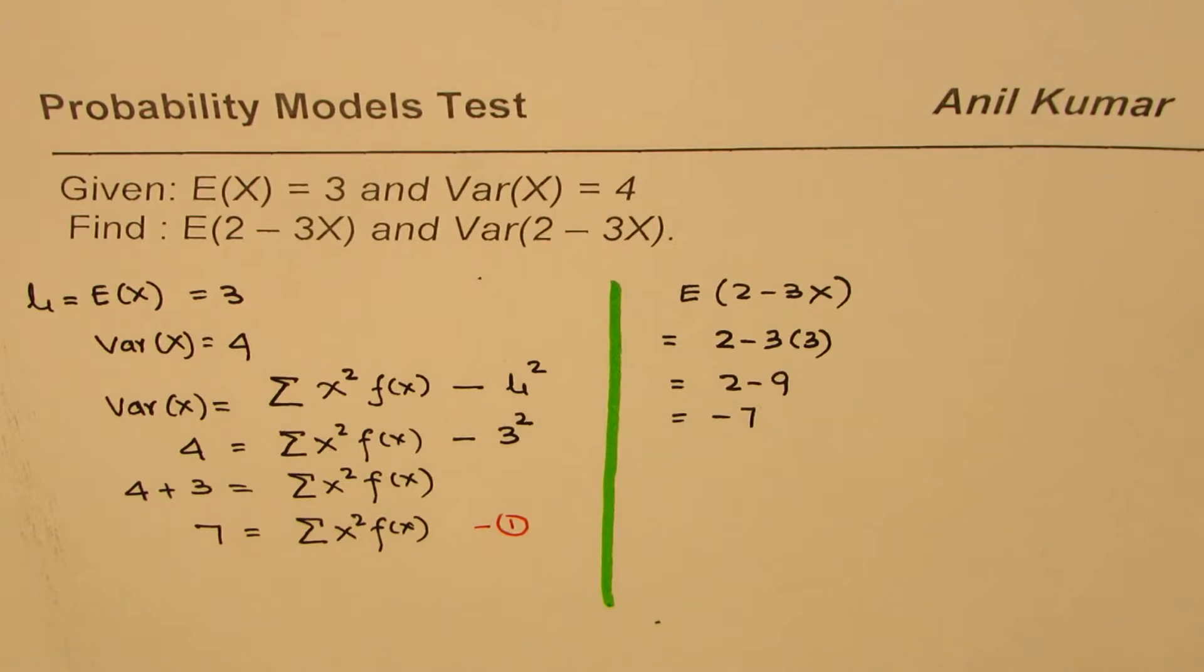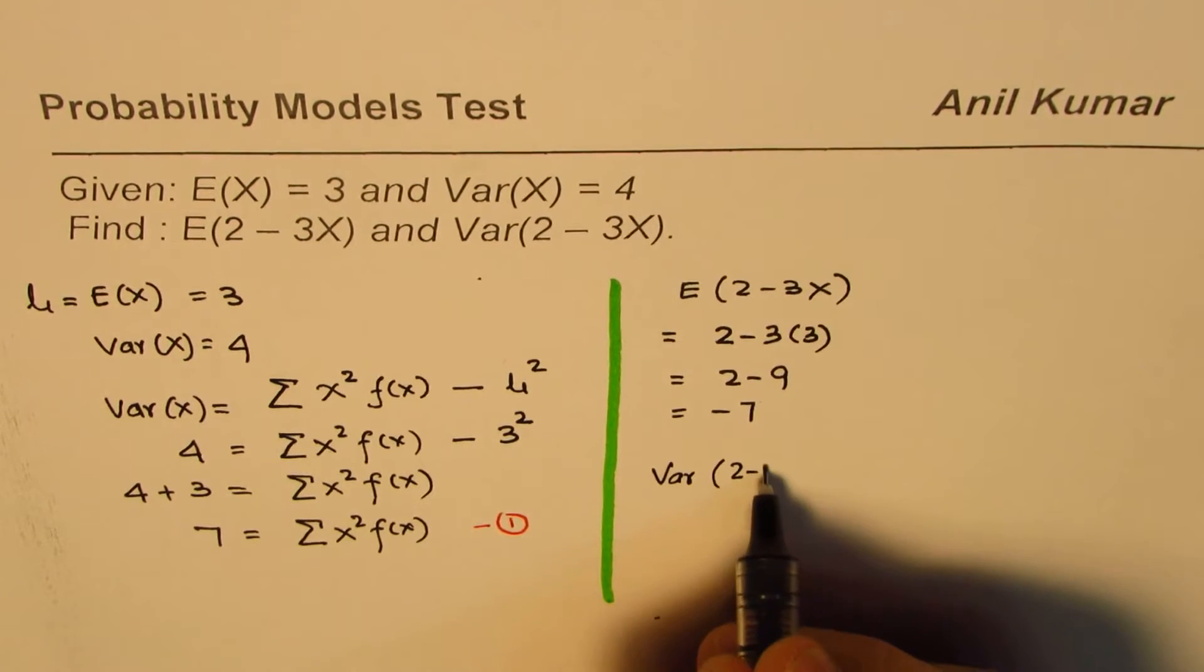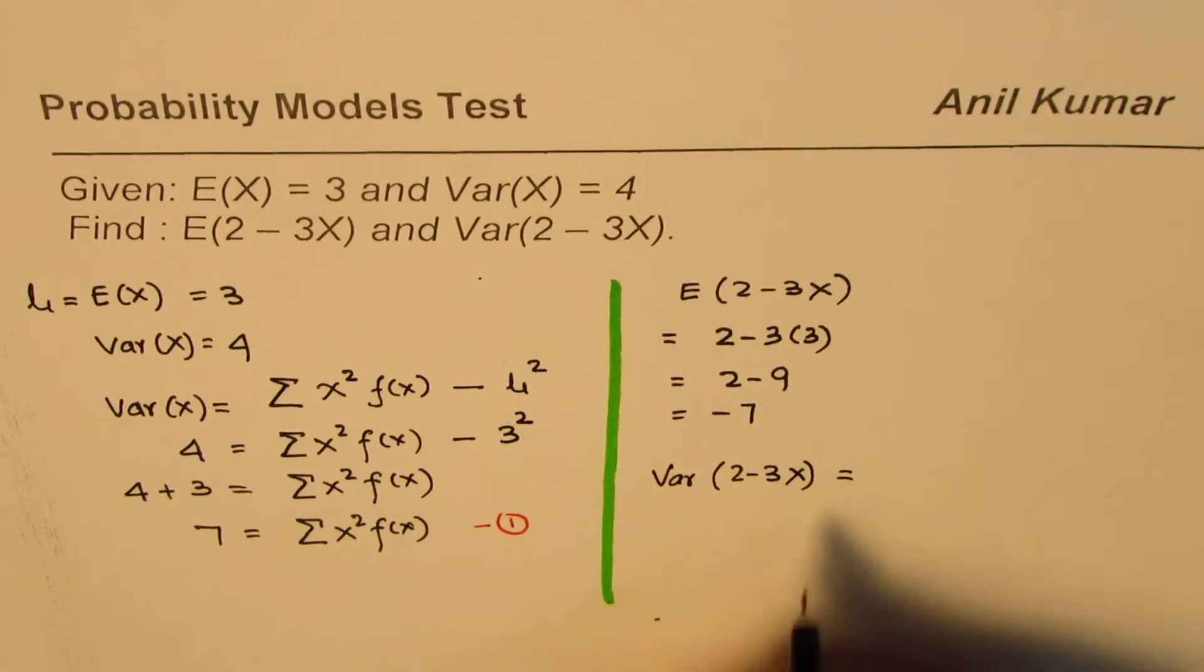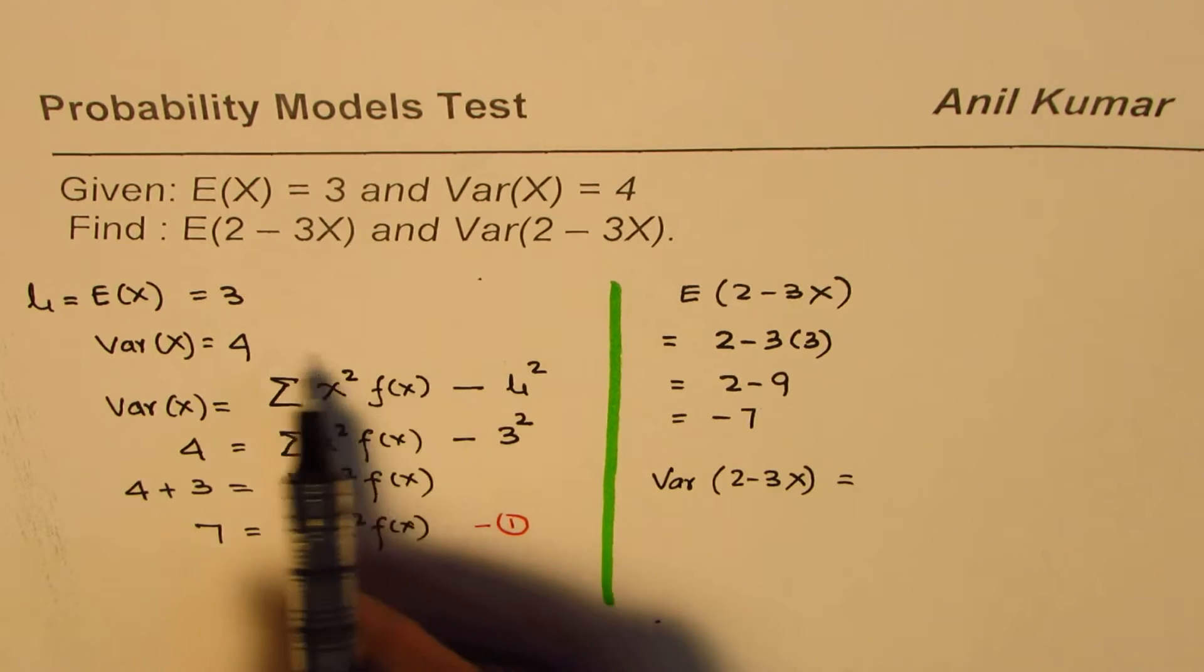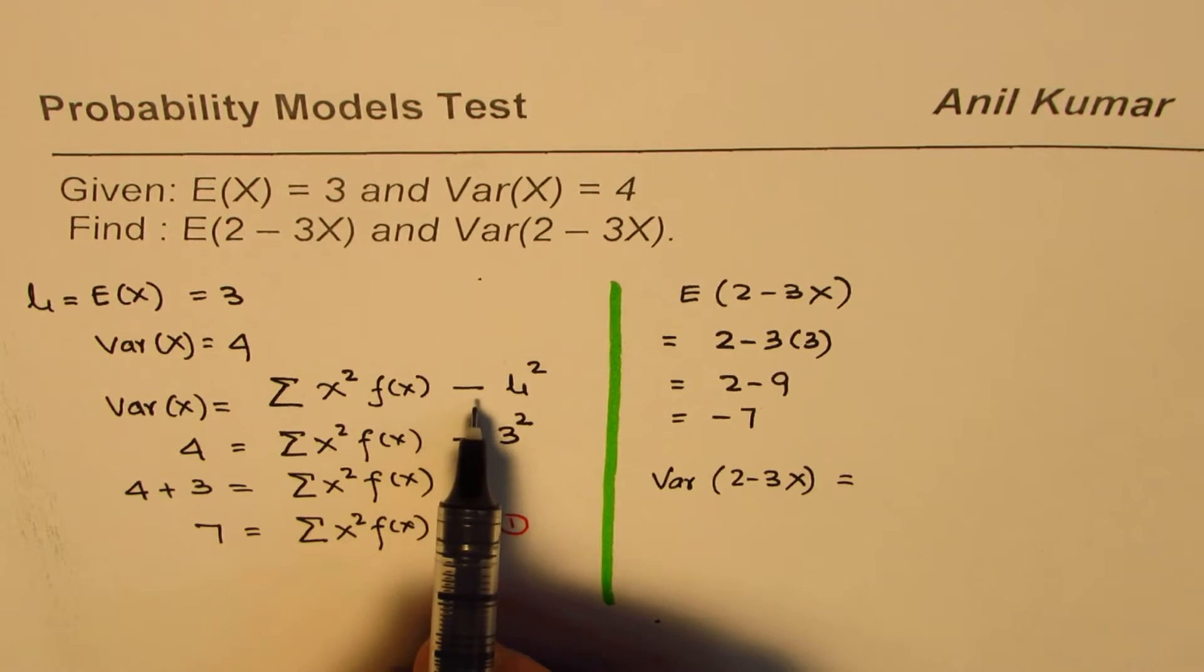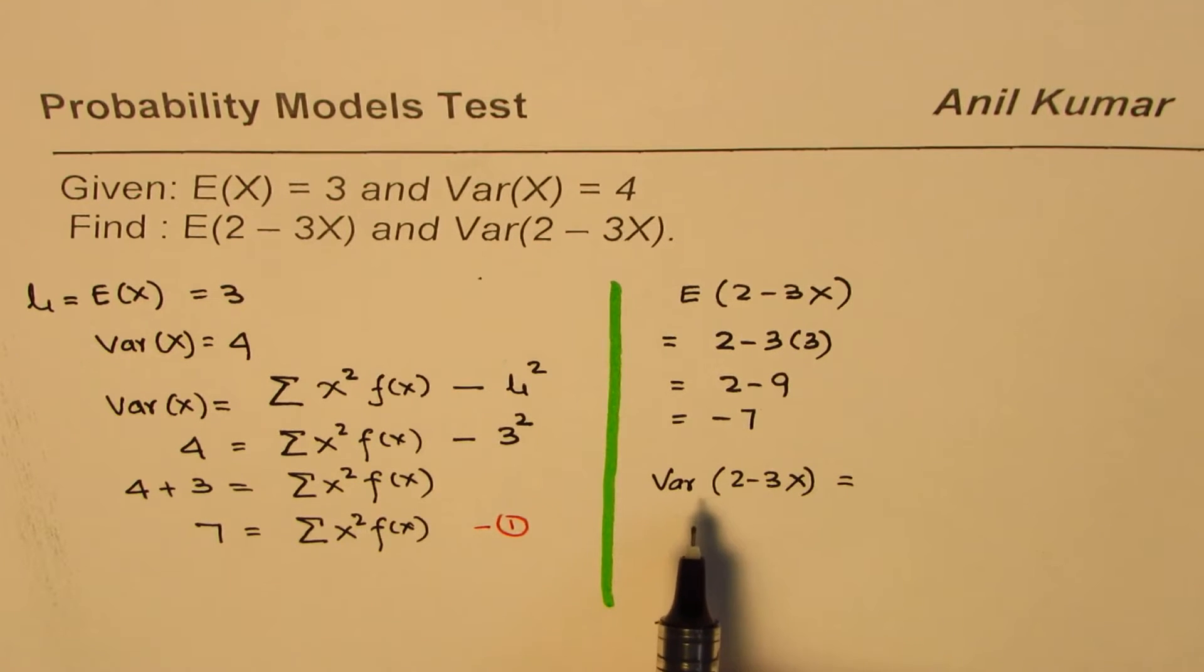Now as far as the variance is concerned, variance for 2 minus 3x will be equal to this quantity, which we are calling as a constant, minus the mean square. That should give us the variance.